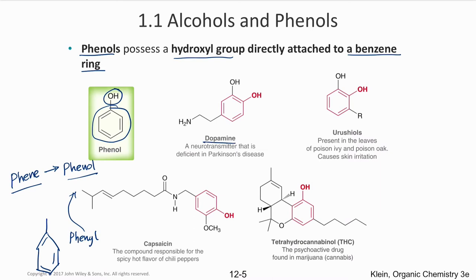Common phenol-based compounds include dopamine, a neurotransmitter whose deficiency causes Parkinson's disease; urushiols, present in poison ivy and poison oak, which cause skin irritation on contact; and capsaicin, the compound responsible for the hot flavor of chili peppers, measured on a capsaicin scale.